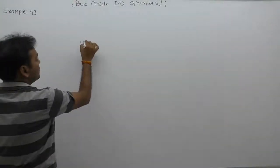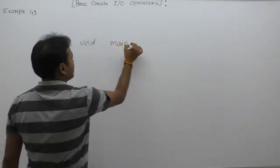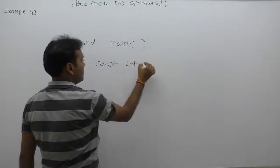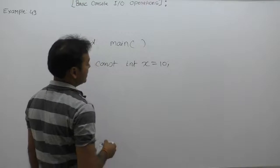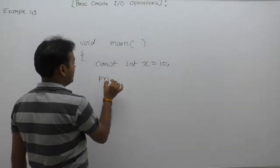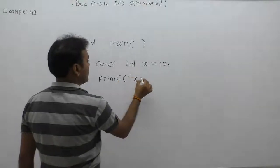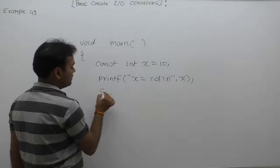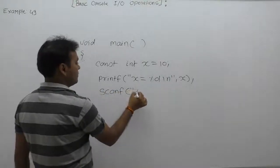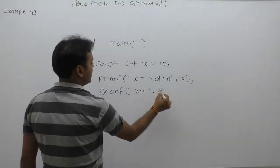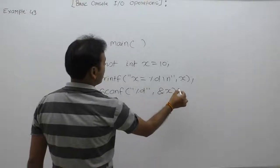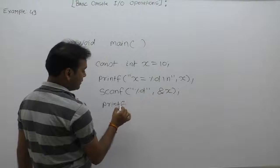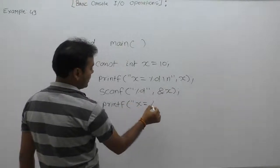In the code example, we are declaring a constant variable using the const keyword: const int x equals to 10. The initial value of x is 10. Then we display the value of x using printf — it will print 'x = 10'. Next, we use the scanf function to read a value for x. Since scanf takes the address of the required variable, we are supplying the address of x, and then we display the value of x again after executing scanf.